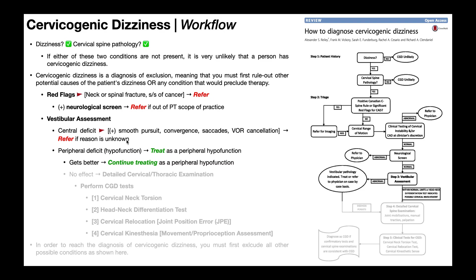For example, if a patient has no history of stroke, no past history of concussion or trauma to the head or neck — nothing that you or they are aware of that could cause a central deficit — you'd want to refer out. But if somebody already had a stroke and is in rehab and presents with some of these tests positive, that's not a reason for referral; you'd actually expect some of these to be positive in that case.